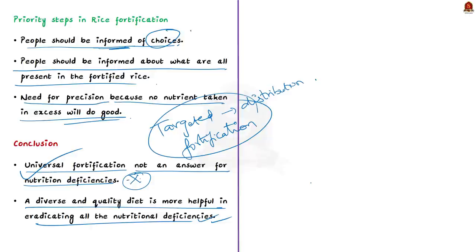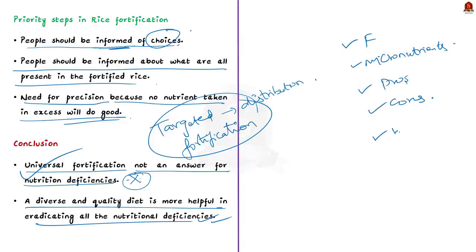To summarize today's fortification discussion: we saw what fortification means, what micronutrients are and why we need them, the advantages of fortification, the disadvantages of rice fortification, and finally what needs to be kept in mind to attain desired results. Now let us get to the next discussion.